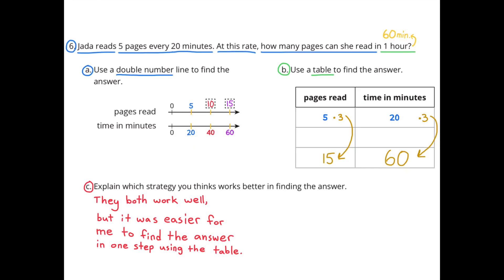Part c: Which strategy works better for finding the answer? Both work well, but it was easier to find the answer in one step using the table — multiplying 20 by 3 to get 60, then multiplying 5 times 3 to get 15. It worked out nicely that 20 times 3 equals 60, so it could be done in just one step.